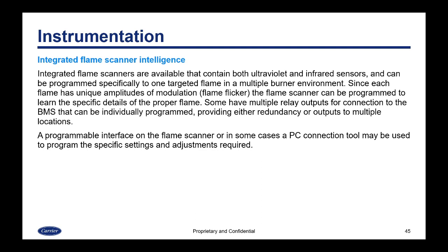Integrated flame scanners are also available that contain both ultraviolet and infrared sensors and can be programmed specifically to one targeted flame in a multiple burner environment. Since each flame has unique amplitudes of modulation or flame flicker, the flame scanner can be programmed to learn the specific details of the proper flame. Some have multiple relay outputs for connections to the BMS that can be individually programmed to provide either redundancy or outputs to multiple locations. A programmable interface on the flame scanner or a PC connection tool may be used to program the specific settings and adjustments you need.